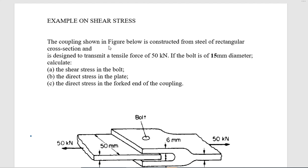The copper ring shown in the figure below is constructed from steel of rectangular cross-section and is designed to transmit a tensile force of 50 kilonewtons. If the bolt is of 15 millimeter diameter, calculate: (a) the shear stress in the bolt, (b) the direct stress in the plate, and (c) the direct stress in the forked end of the coupling.